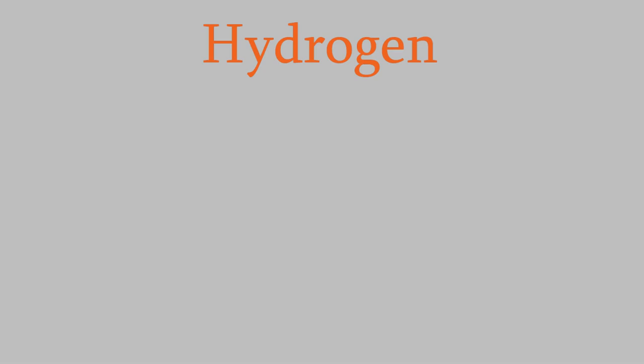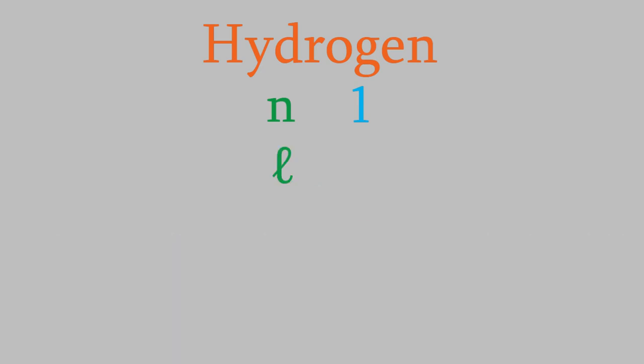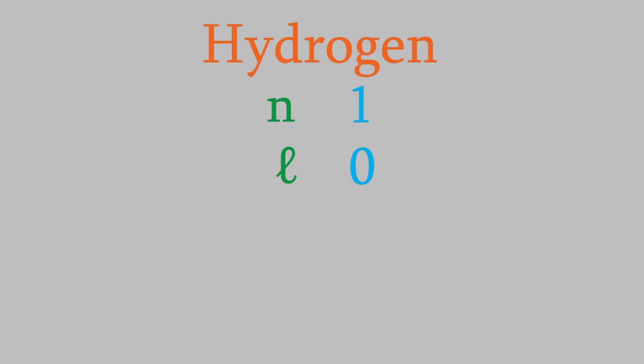So we'll start with n. We know that n can have any integer value from one on up. However, we also know that electrons like to have the lowest energy possible, so the electron will go into the lowest numbered shell, which has a value of n equals 1. Now we'll look at l. L can have a value from zero up to n minus 1. In this case, that means l must be equal to zero. So that tells us that the electron is in a 1s orbital.